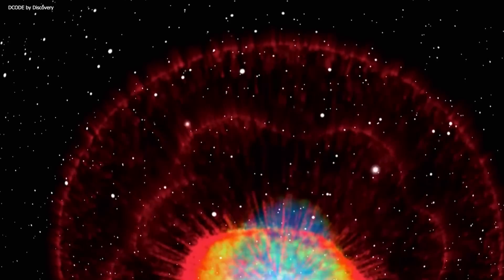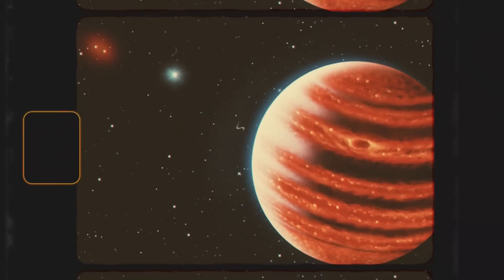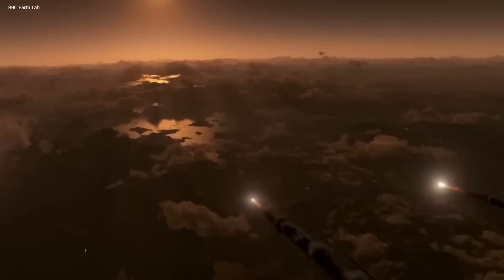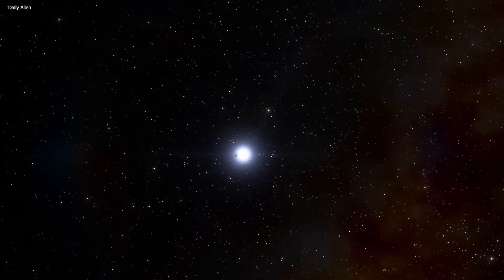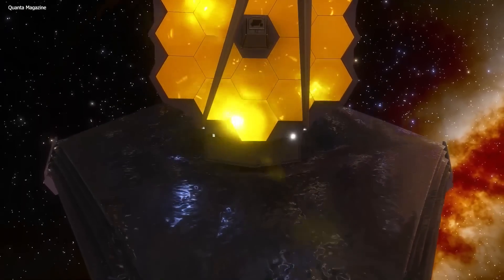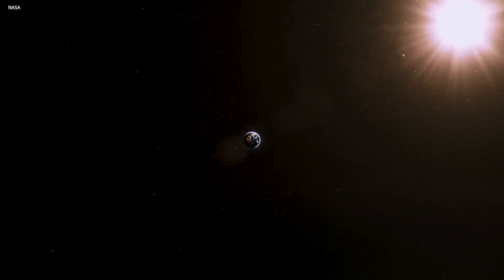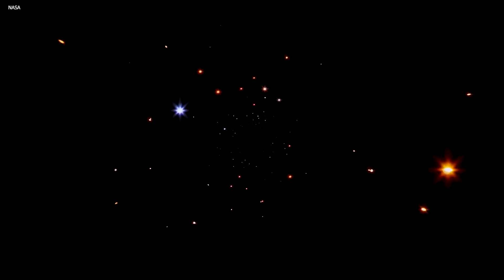As JWST explores the genesis of stars and planets, it takes an even bolder leap, the quest to examine exoplanetary systems. It trains its keen eye on distant planetary realms, studying their atmospheres, compositions, and potential for life. Through the delicate analysis of light passing through exoplanet atmospheres, JWST hunts for the signatures of water vapor, carbon dioxide, methane, and other molecules that may unveil the secrets of habitability. This cosmic detective work challenges us to contemplate the existence of other worlds teeming with life, expanding our vision of the universe's potential.